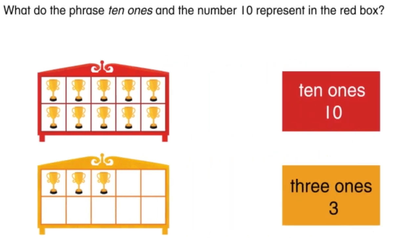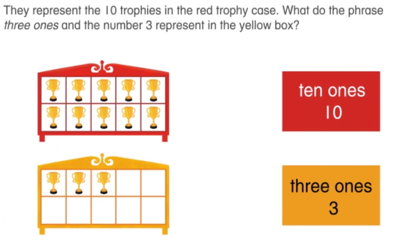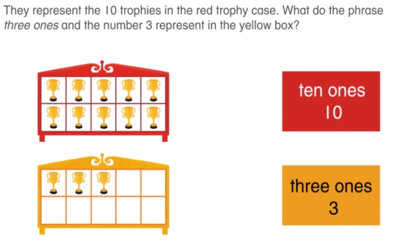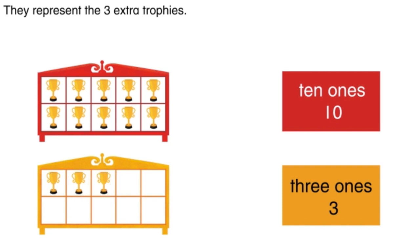What do the phrase '10 ones' and the number 10 represent in the red box? I see a total of 10 trophies — there's one in each box, so that must be 10 ones. They represent the 10 trophies in the red trophy case. What do the phrase '3 ones' and the number 3 represent in the yellow box? If 10 ones represents 10 in the top case, then 3 ones must represent the three in the bottom case. They represent the three extra trophies.